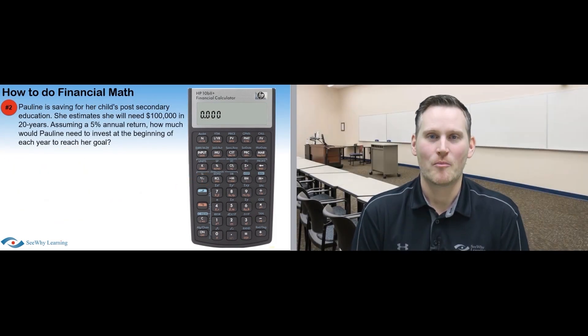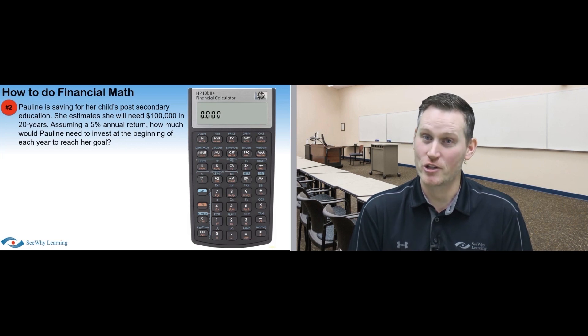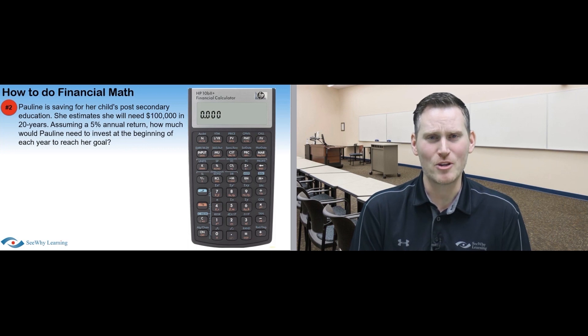Question number two. Pauline is saving for her child's post-secondary education. She estimates she'll need $100,000 in 20 years. Assuming a 5% annual return, how much would Pauline need to invest at the beginning of each year to reach her goal? Well this question deals with regular payments, so we have to adjust in our calculator to tell it...